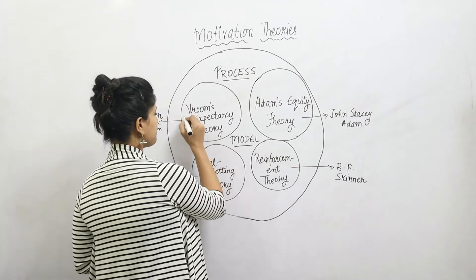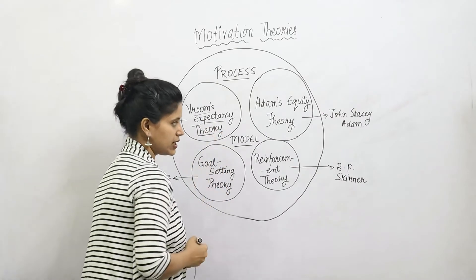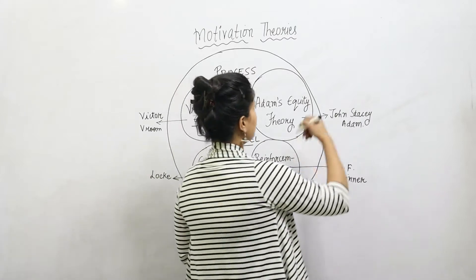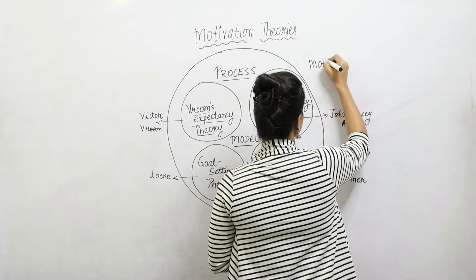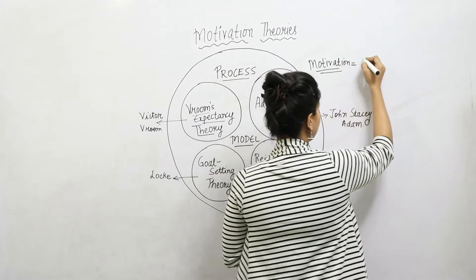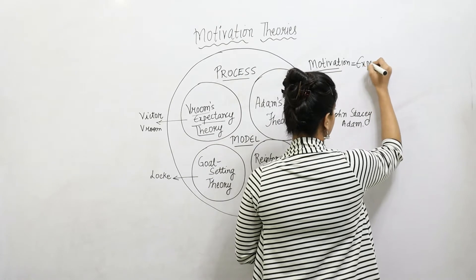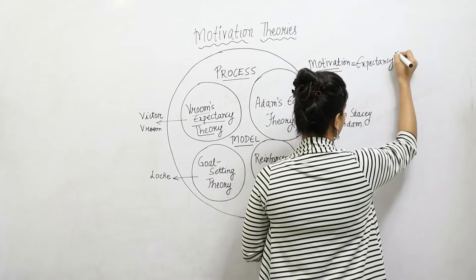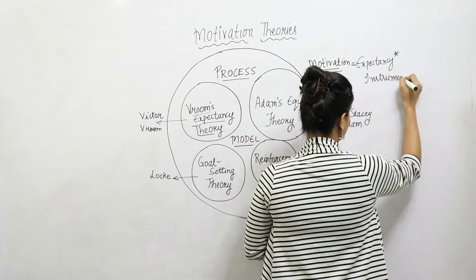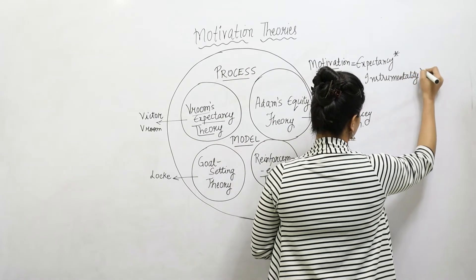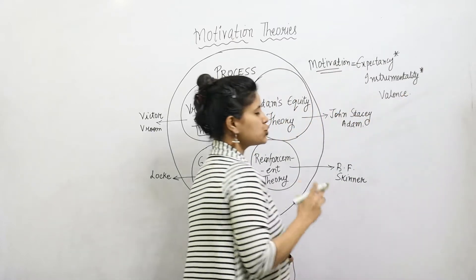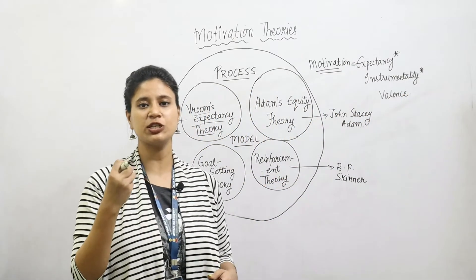First, we come to Vroom's Expectancy Theory. In this theory, we have motivation defined by a formula involving three things: Expectancy, Instrumentality, and Valence. Victor Vroom emphasized that employees think if they put in certain efforts, that will take them towards the required and desired outcome.